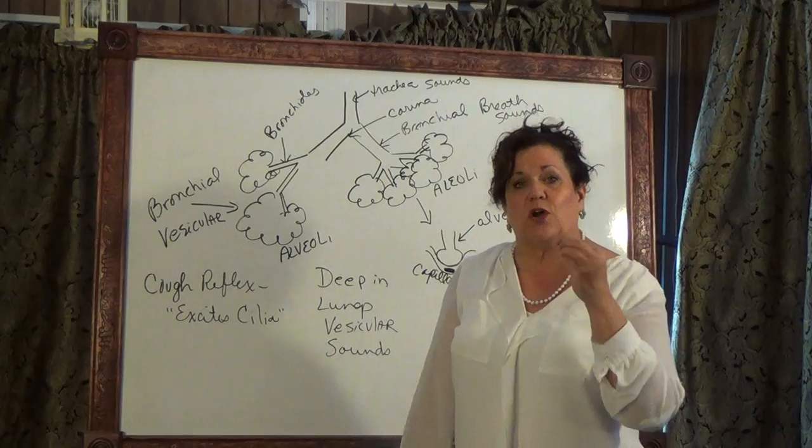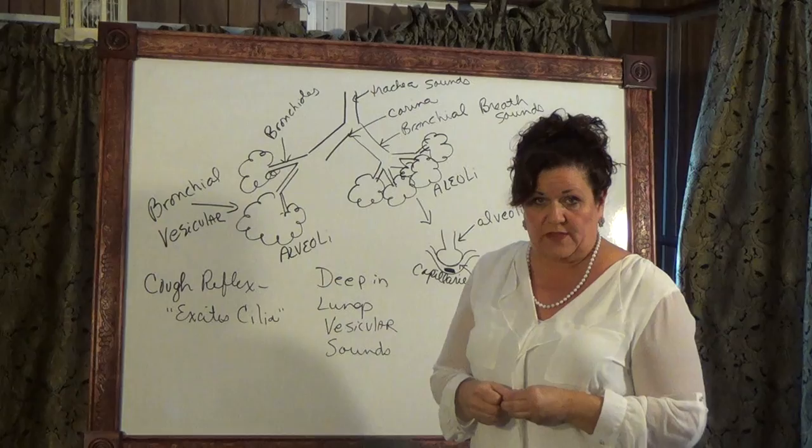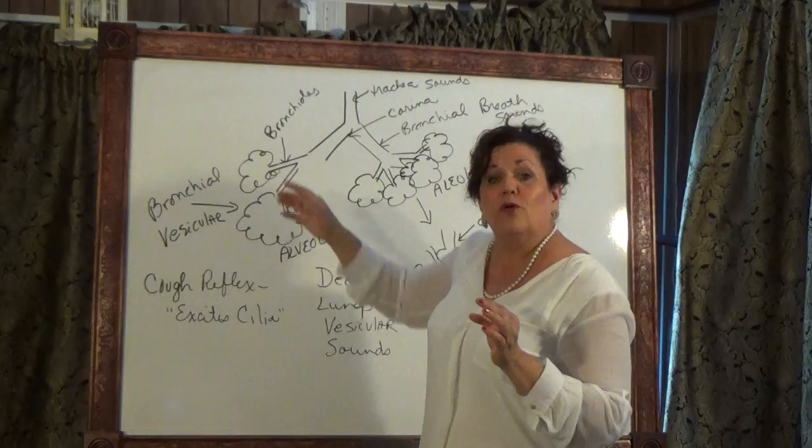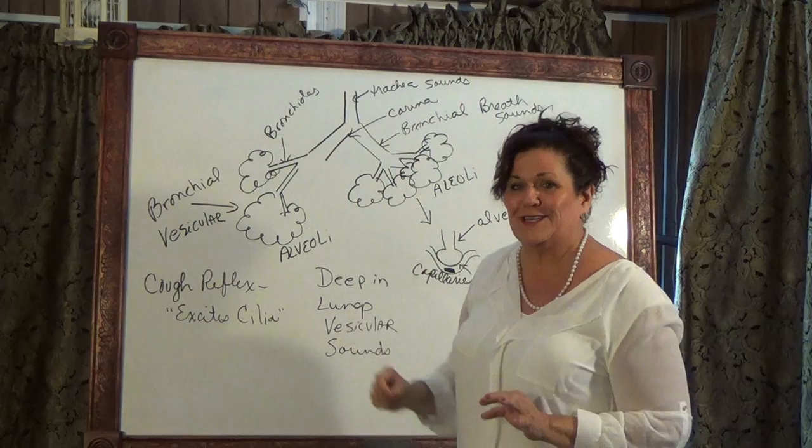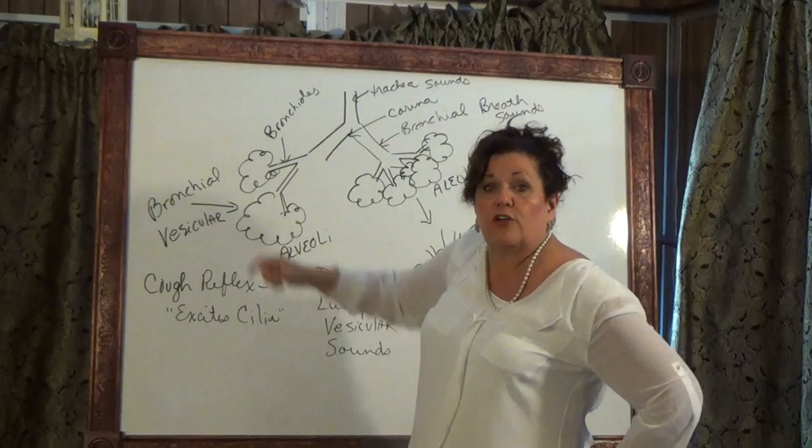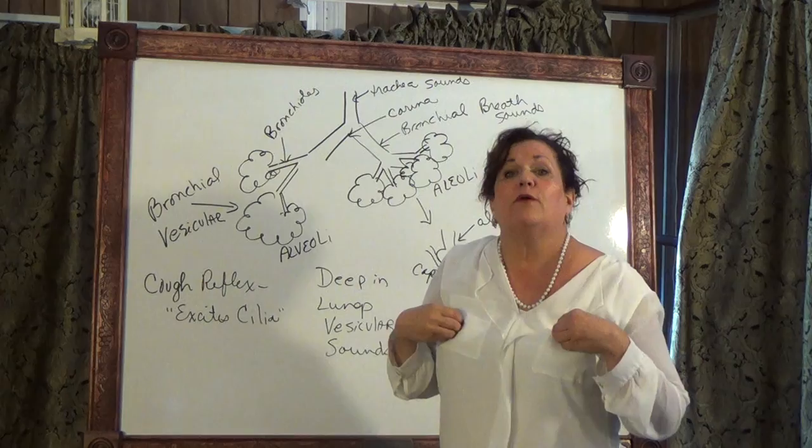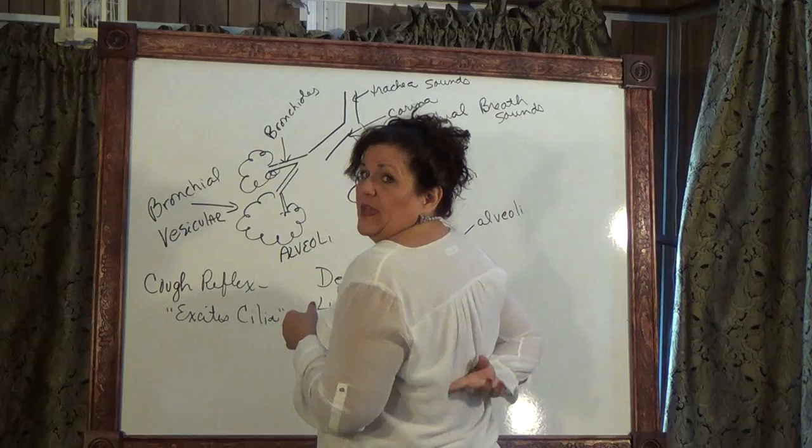If you put your stethoscope over one of the bronchi, those are bronchial breath sounds. Then as it breaks down into bronchioles and our alveoli here, our upside-down respiratory tree, bronchioles and your alveoli are called bronchovesicular sounds. So if I put my stethoscope here, I would get bronchovesicular sounds.